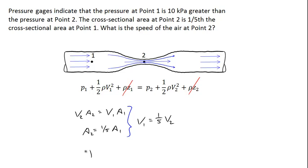And if I make a substitution I've got P1 + 1/2 ρ × (1/5 V2)² is equal to P2 + 1/2 ρ V2².